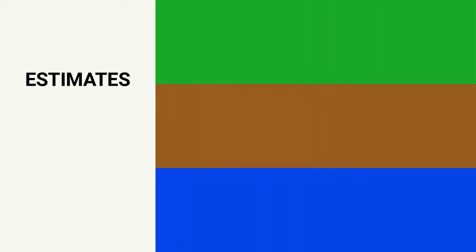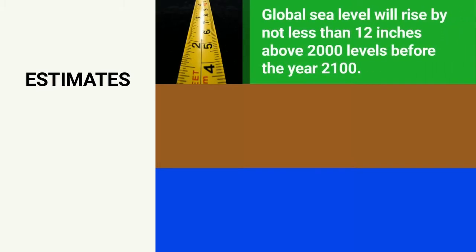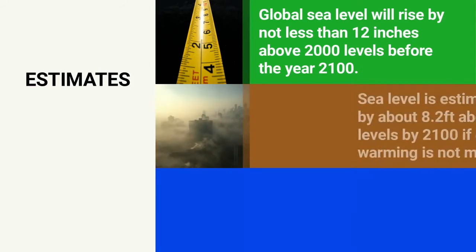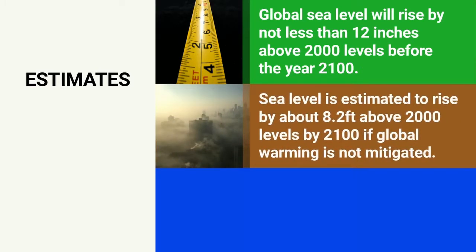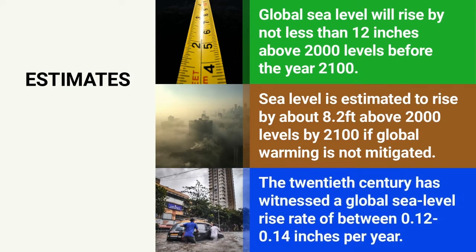It is estimated that the global sea level will rise by not less than 12 inches above 2000 levels before the year 2100, but only if greenhouse gas emissions are minimized. A high emission pathway may worsen the problem of sea level rise — the sea level is estimated to rise by about 8.2 feet above 2000 levels by 2100 if global warming is not mitigated. Between 1880 and 2013, the global sea level rose by about 0.06 inches each year. The 20th century witnessed a global sea level rise rate of between 0.12 to 0.14 inches per year.